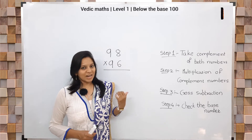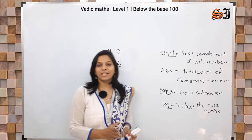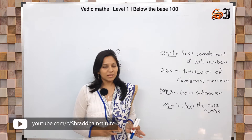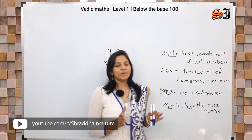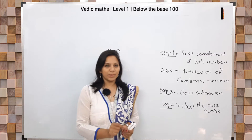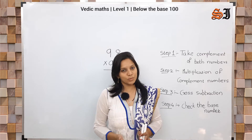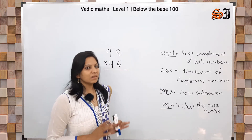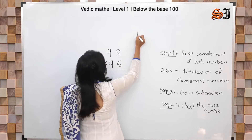Below the base, the specific method. In Vedic Maths there are two types: specific method and general method. Specific method means for particular numbers we use a specific trick. General method means for any number we can use that trick. So now let's start with our specific method — Below the Base 100.